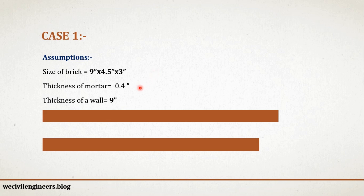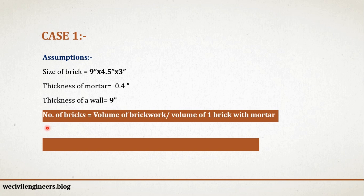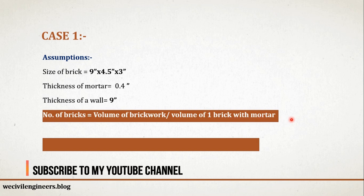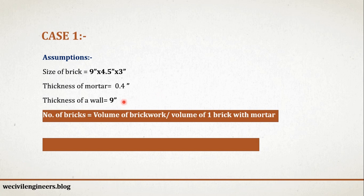Thickness of mortar equals 0.4 inch. The thickness of wall equals 9 inch. To find out the number of bricks in brickwork, you need to remember a simple formula: number of bricks equals volume of brickwork divided by volume of one brick with mortar. We know the area of brickwork — that is 1000 square foot — and we know the thickness of wall, that is 9 inch.